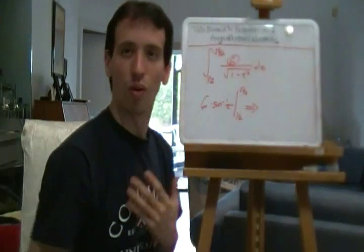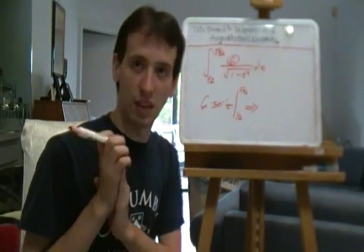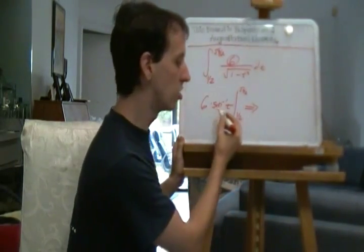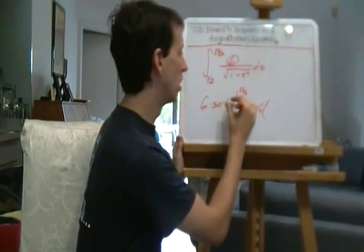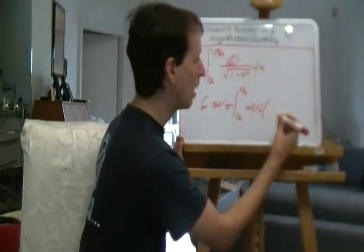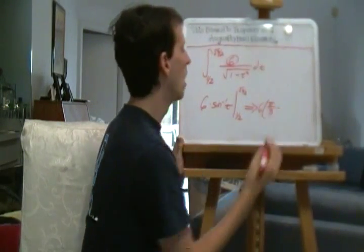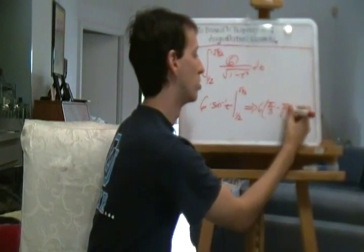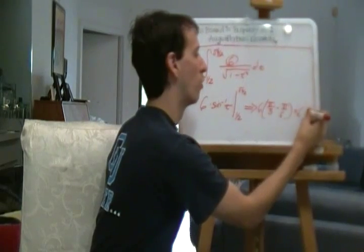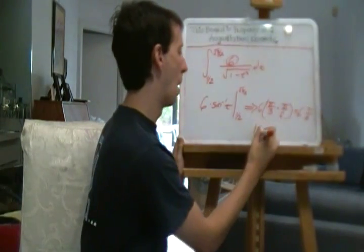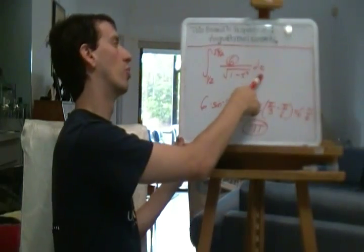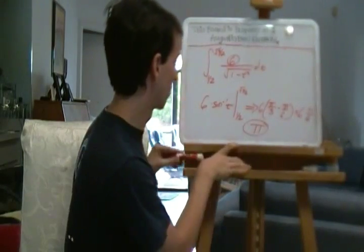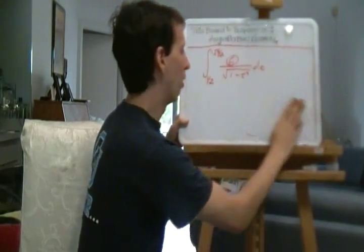If you got that far and don't know the trig values, congratulate yourself — that's very good. If you do know the trig values: arcsine of √3/2 is π/3, arcsine of 1/2 is π/6. So you get 6 times (π/3 − π/6) = 6 times π/6, which is just π. The answer to that integral is π. Pretty cool.